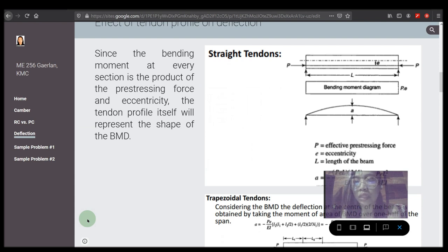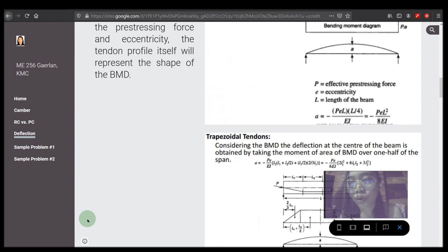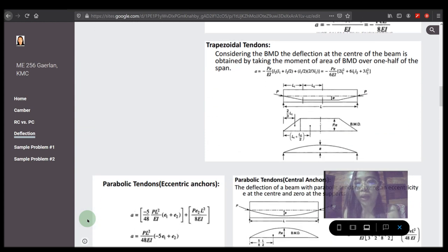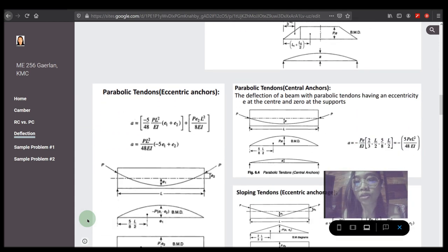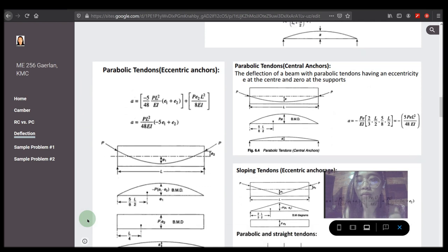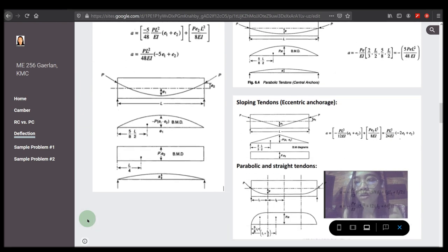Shown here are the fractions for different types of tendon profile. We have straight tendons, trapezoidal tendons, parabolic tendons if eccentric anchor or central anchor, then we have sloping tendon, combination of parabolic and straight.